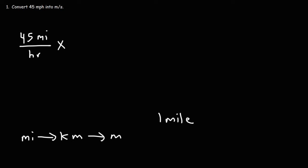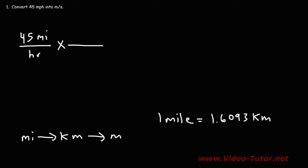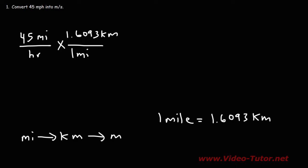It's important to know that one mile is equal to 1.6093 kilometers. Let's use that conversion factor to convert from miles to kilometers. Notice that we have miles on the top. In order for that unit to cancel, we want to put the same unit on the bottom. So this portion of the conversion factor we're going to put on the bottom, and the other part on top of the second fraction. As we can see, the unit miles cancel at this point.